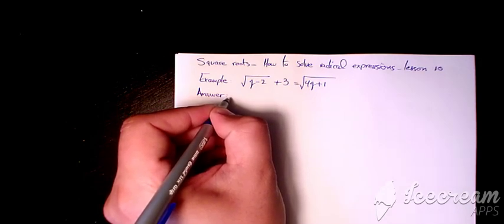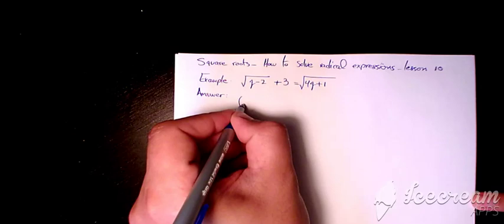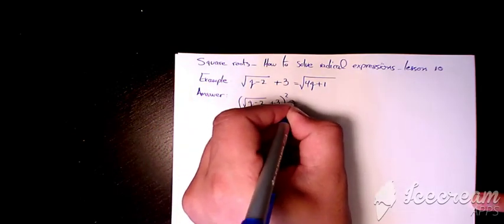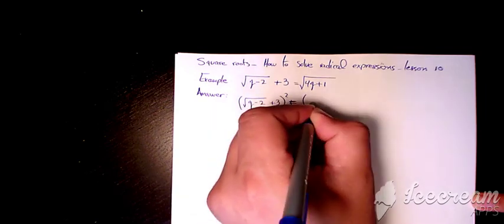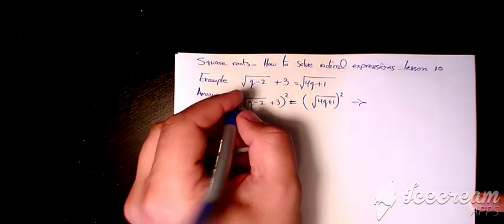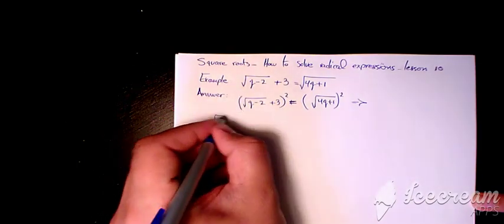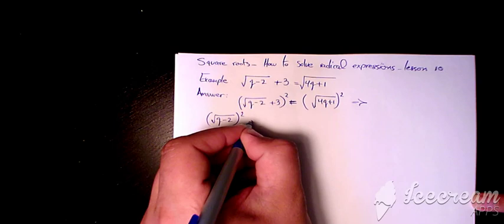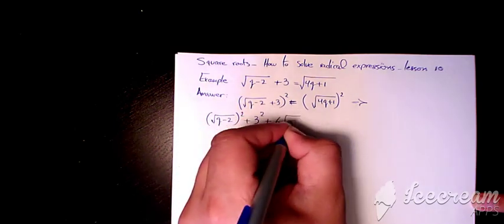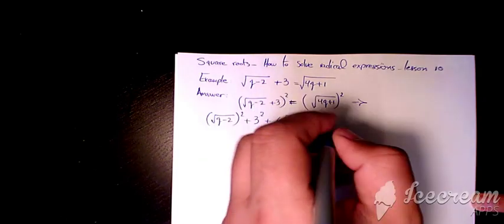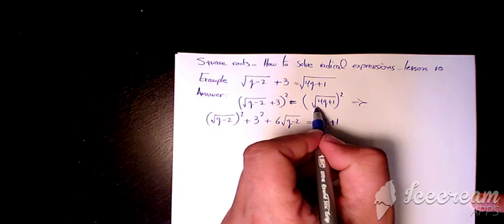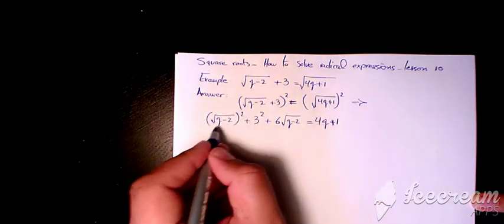So we need to square both sides. It's going to be (square root of (q minus 2) plus 3) to the power of two, equals (2 times square root of (4q plus 1)) to the power of two. Expanding the left side: square root of (q minus 2) squared, plus 3 squared, plus 6 times square root of (q minus 2), equals 2 times (4q plus 1), because the 2 and the square root cancel each other.